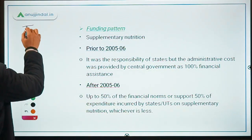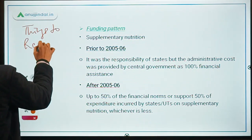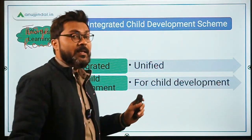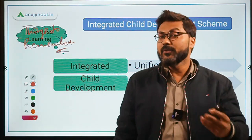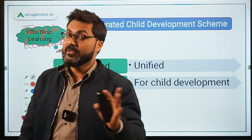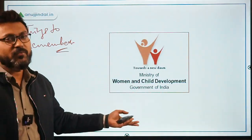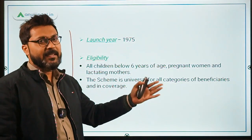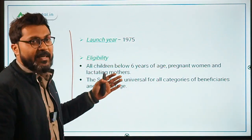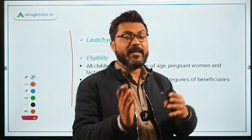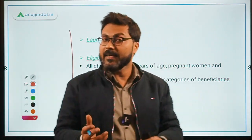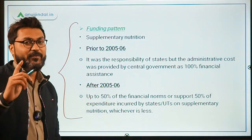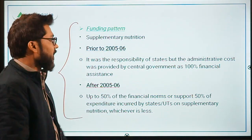To summarize what we've covered so far: the objective is to improve the nutritional and health status of children in the age group of 0 to 6 years; the ministry is the Ministry of Women and Child Development; the launch year is 1975; and all children below 6 years and all pregnant women and lactating mothers are eligible. Now let's talk about the funding pattern, which is a very important thing to remember.